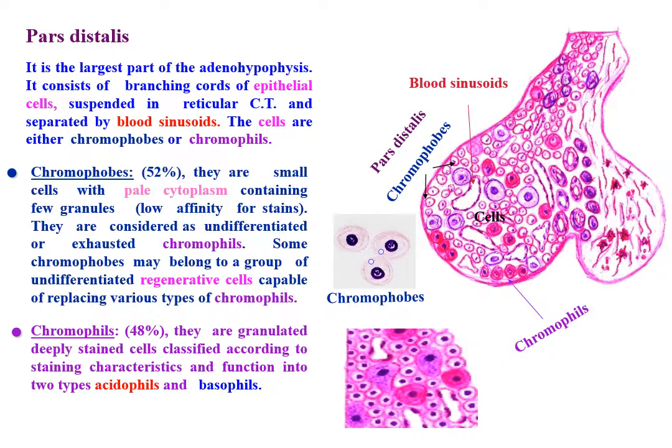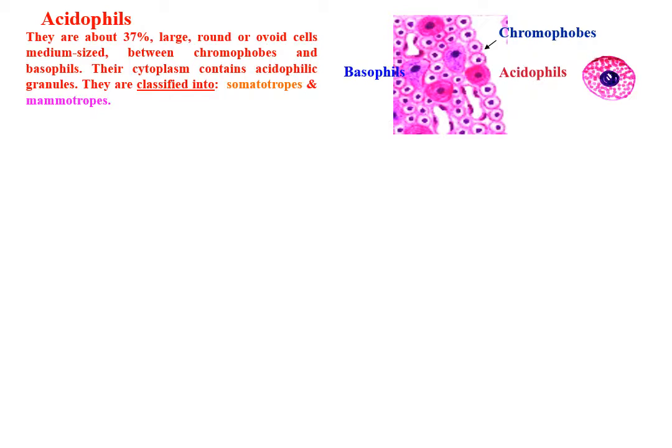Chromophiles, about 48%, are granulated, deeply stained cells classified according to staining characteristics and functions into acidophiles and basophiles. Acidophiles are about 37%. They are large, round or ovoid cells, medium-sized between chromophobes and basophiles. Their cytoplasm contains acidophilic granules. They are classified into somatotropes and mammotropes.